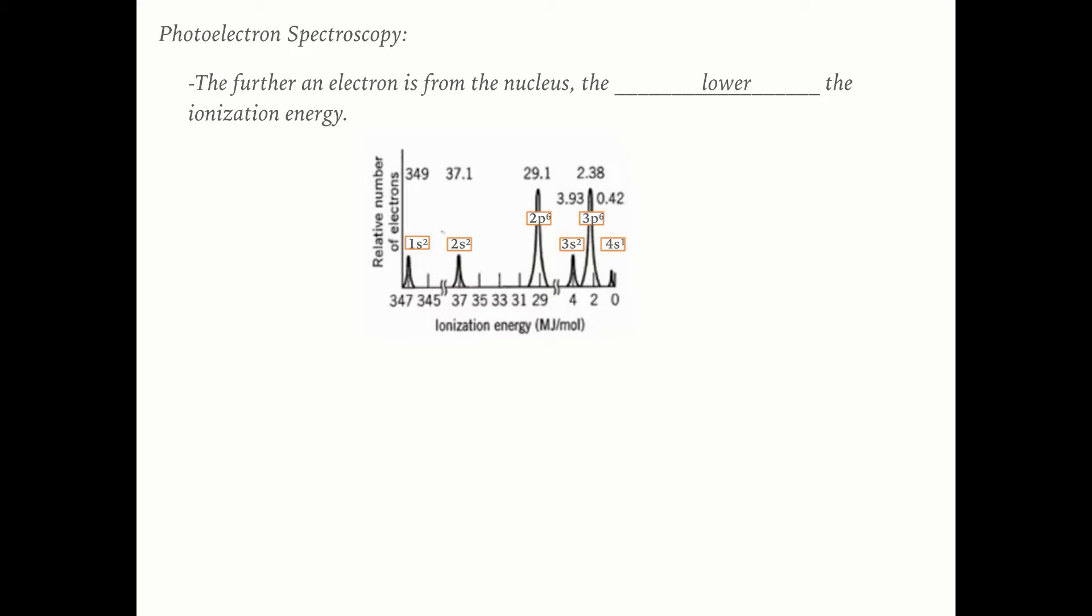Just as a review, what it's counting on is the fact that those 1s electrons are the hardest to remove because they are the closest to the nucleus, meanwhile the 4s is the easiest to remove because it is the farthest from the nucleus.